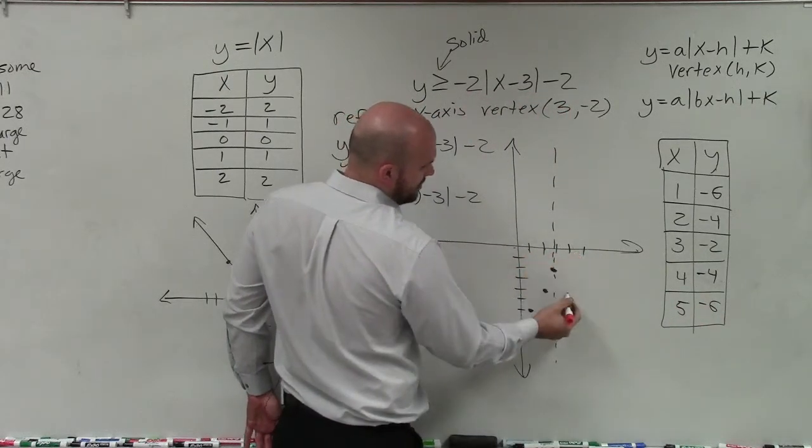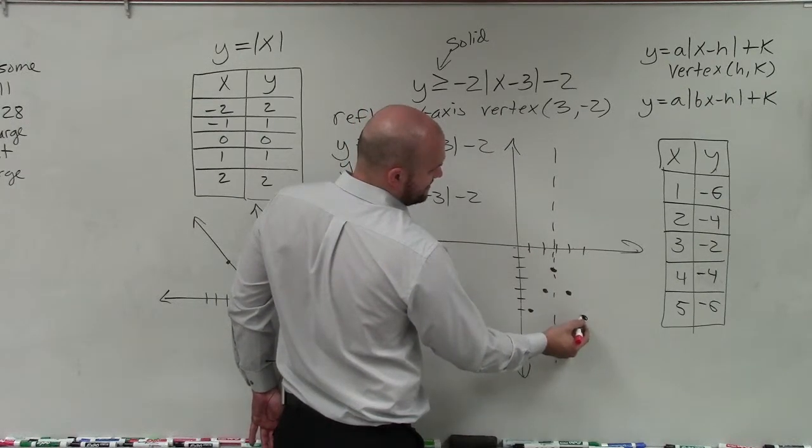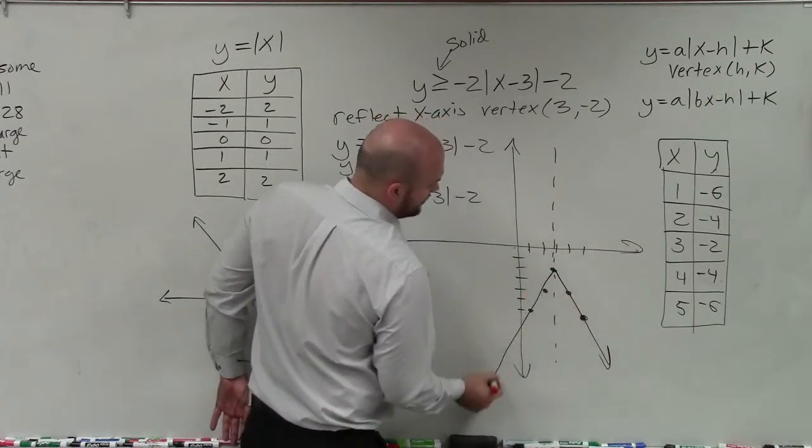So over 4, I go down 4. Over 5, I go down 6. So then, I can just simply go ahead and graph.